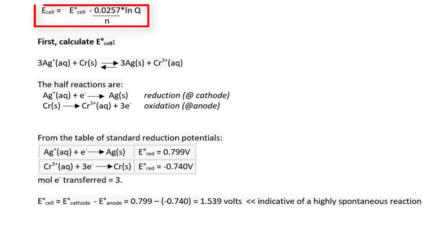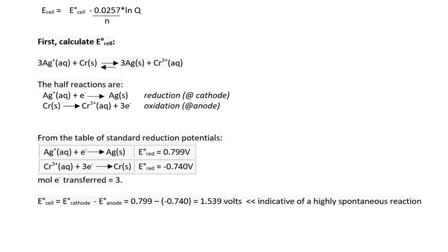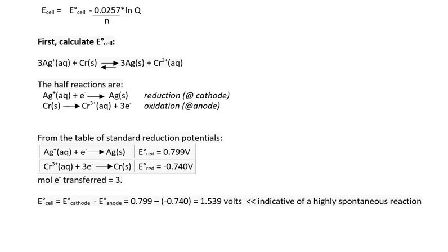With the Nernst equation in mind, we're going to calculate E-cell at standard conditions. To do that, we're going to use the values from the table of standard reduction potentials. The values we're going to use are the reduction of silver to silver solid and chromium to chromium solid, shown here. We substitute these potential values into the equation to calculate E-cell. E-cell turns out to be a positive number, indicative of a highly spontaneous reaction — a reaction that will proceed in the forward direction. The value of 1.539 gets substituted into the Nernst equation.